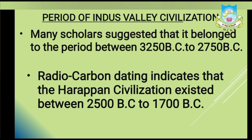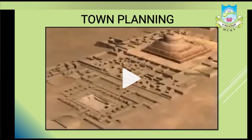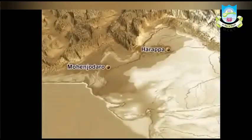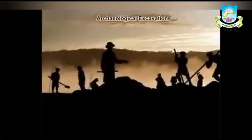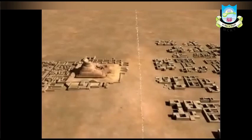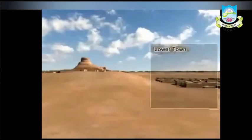Now let us discuss about the most important feature of this civilization — town planning. The Harappan civilization was an urban civilization, meaning it was city-based, and the cities were planned very skillfully. The cities were divided into two parts: the raised part was called the citadel area, and the lower part is called the lower town.